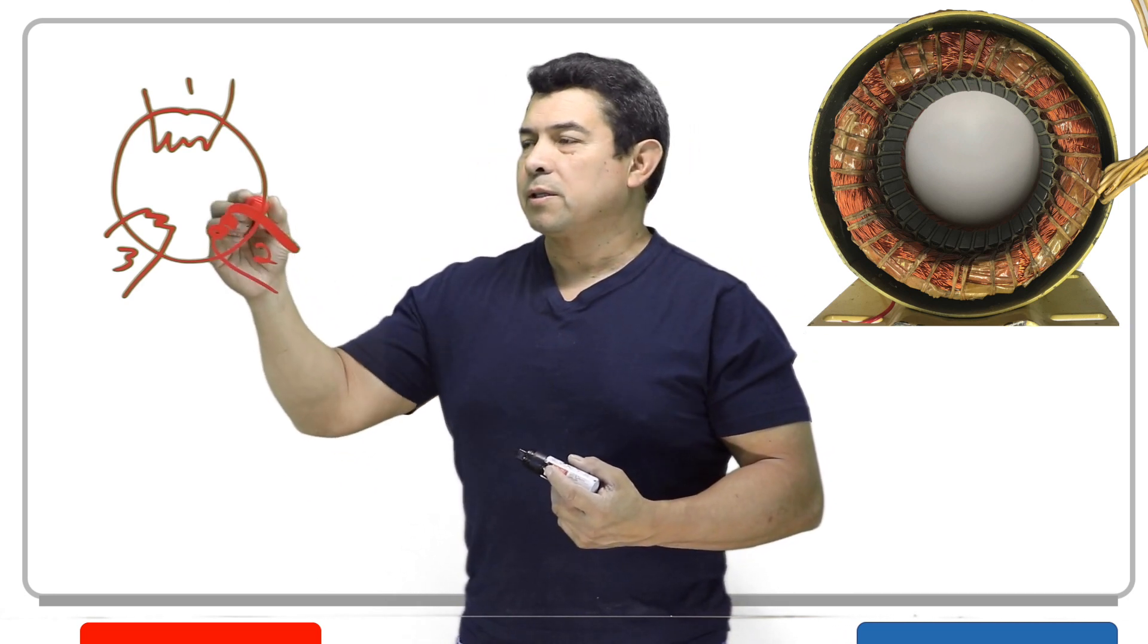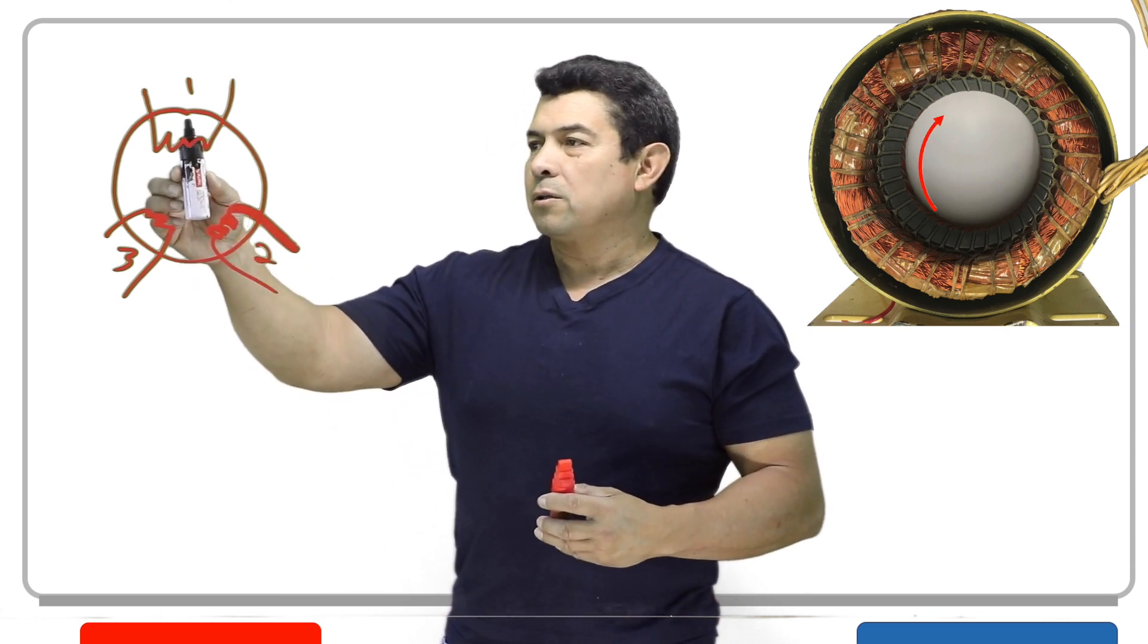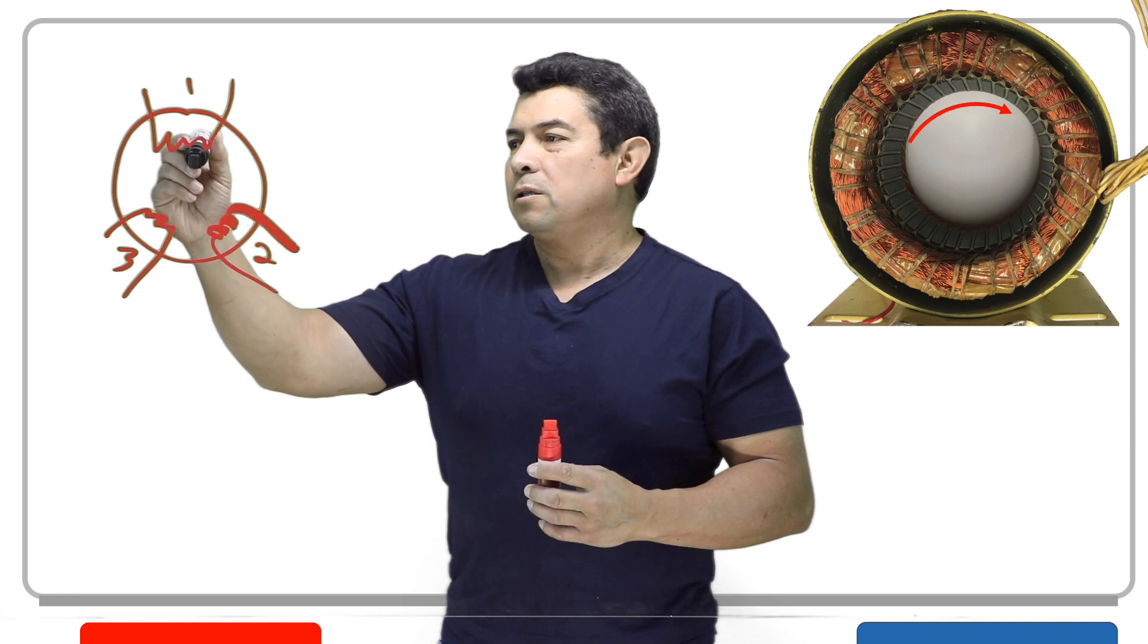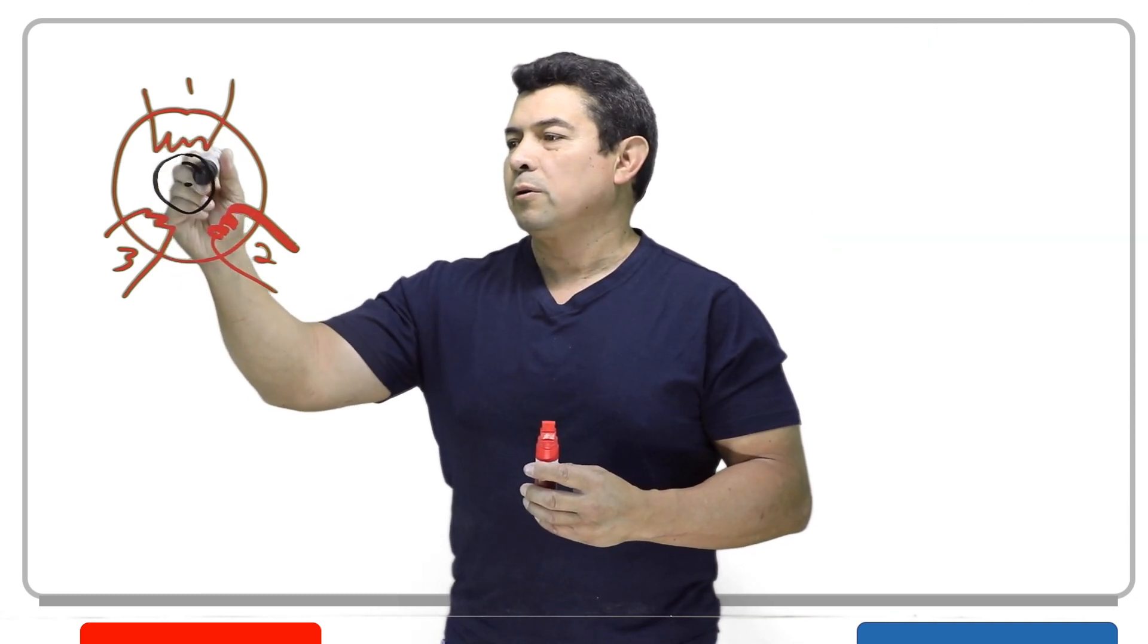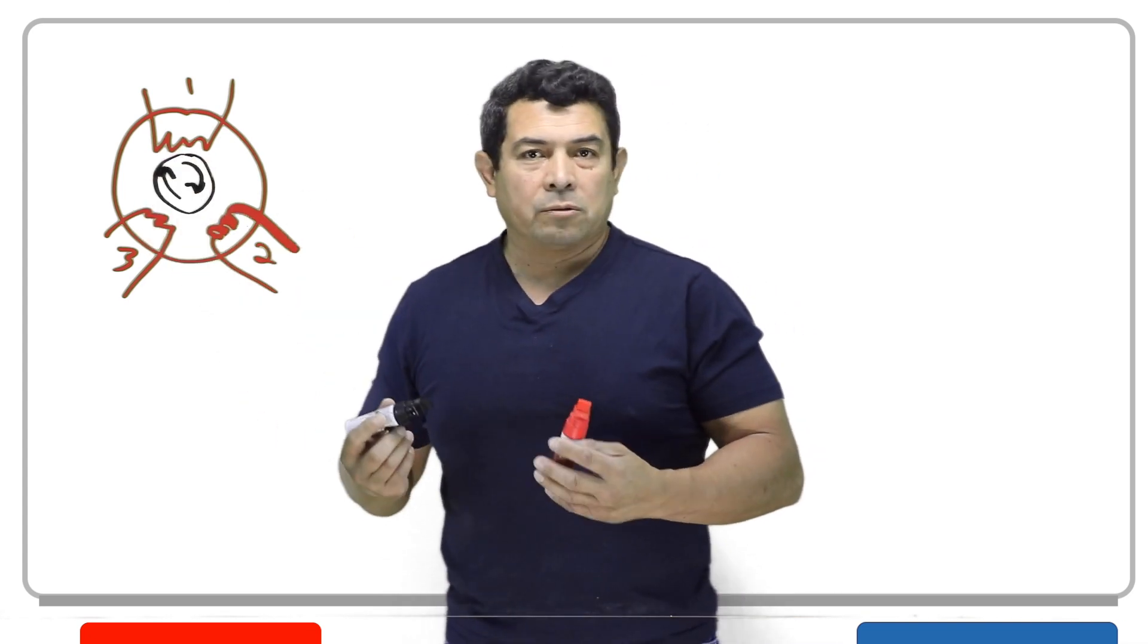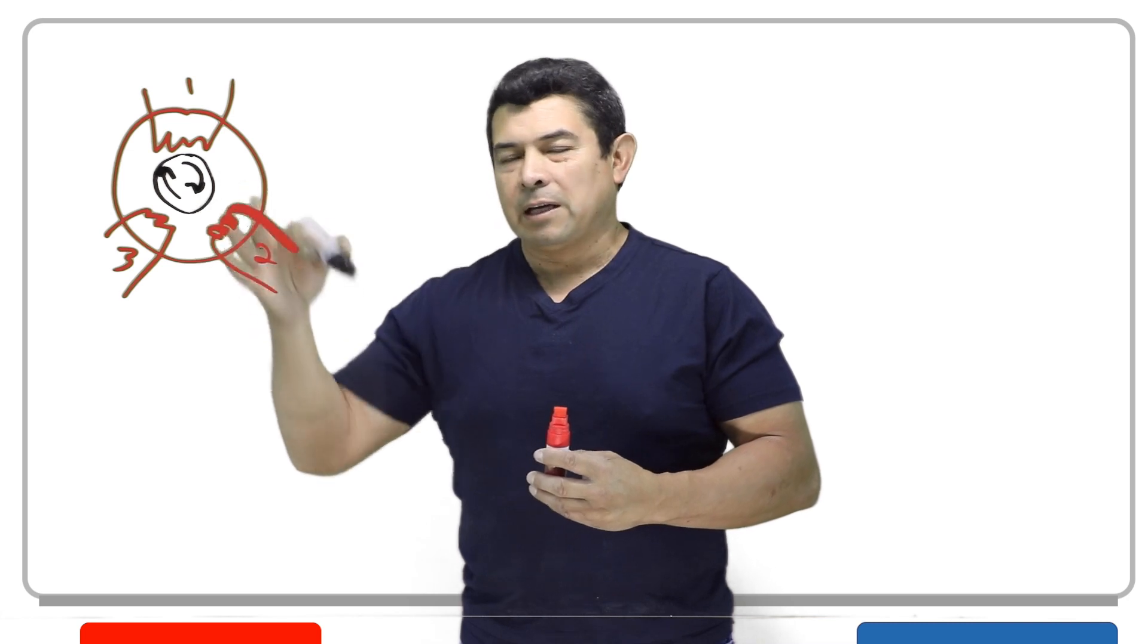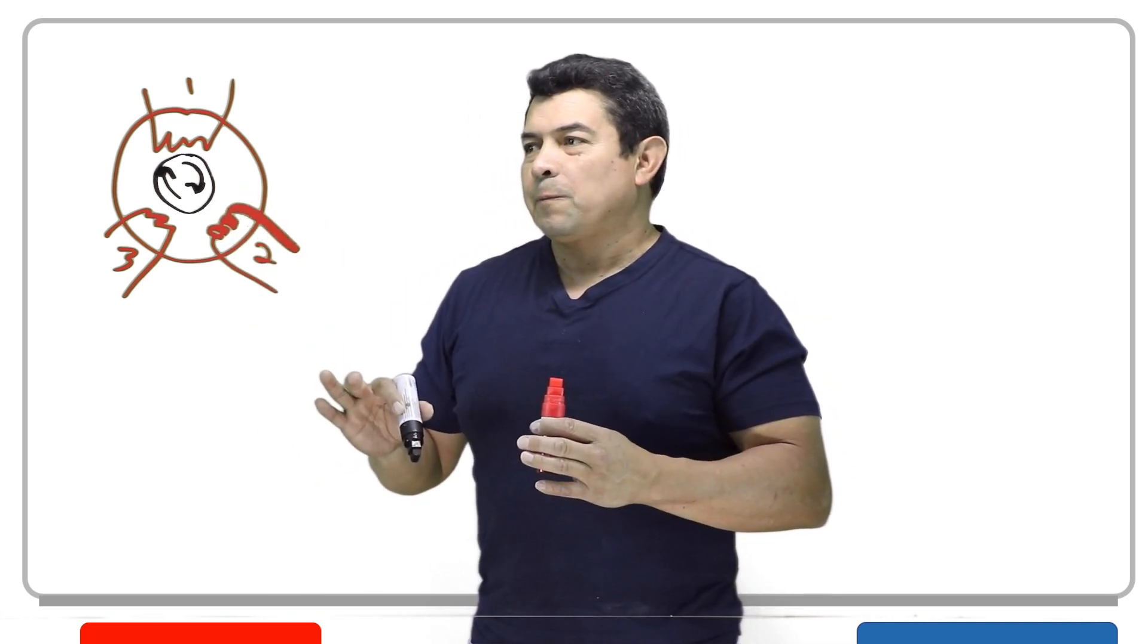And what happens in the motor is the magnetic field that is being generated at the generator is going to sit here and is going to rotate like this. As it rotates, it is inducing a magnetic field on the rotor and making that rotor rotate. That's why the motors rotate, because that magnetic field is actually rotating in the windings like this.